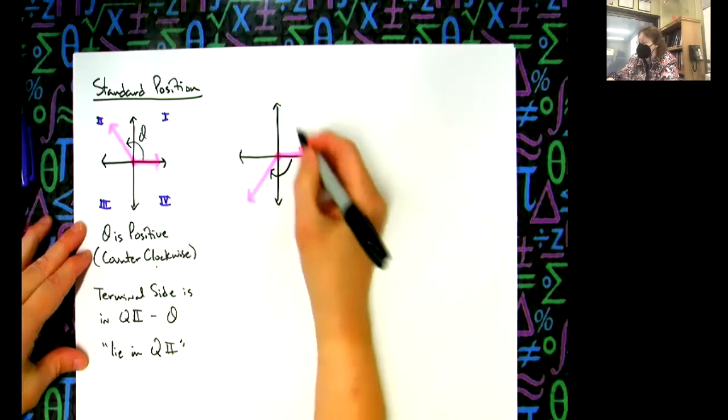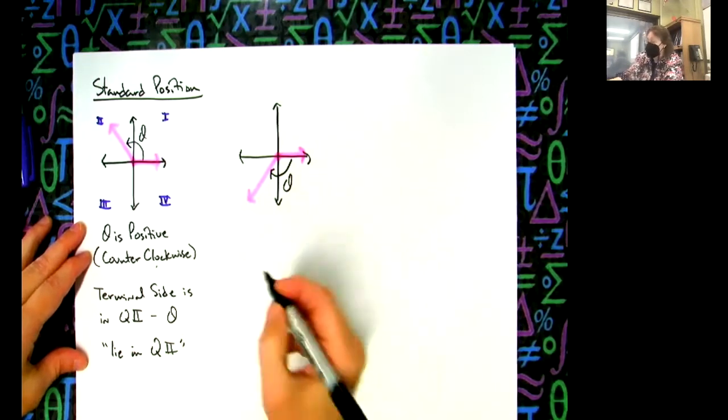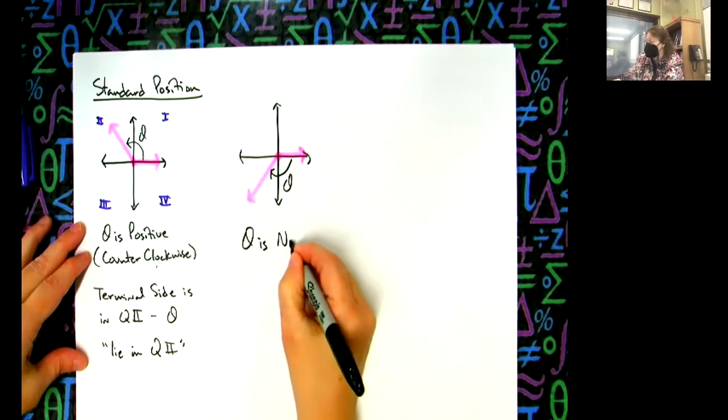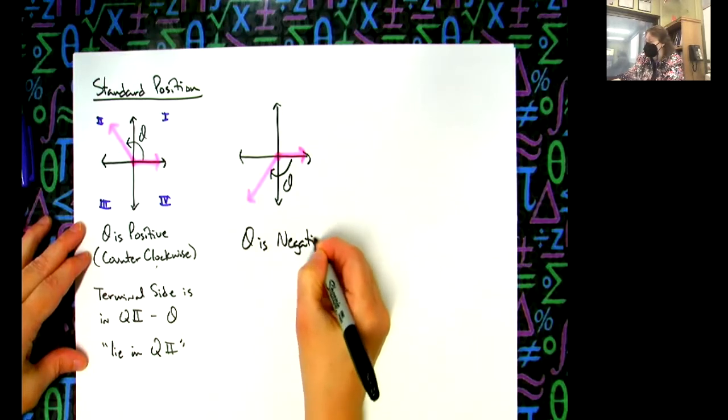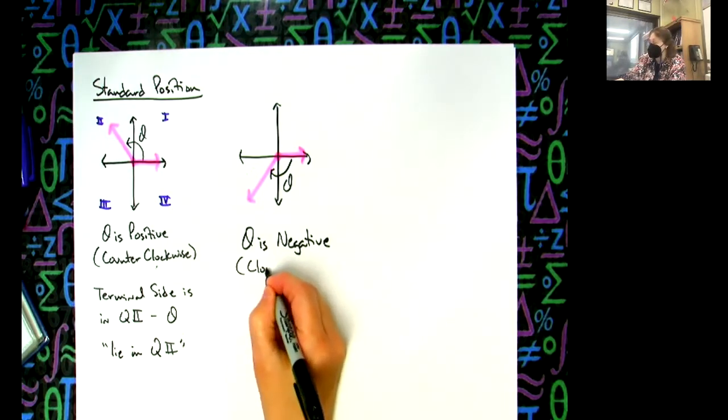If you go clockwise around, as opposed to counterclockwise, then that means our theta is negative. So the orientation of how we go around the coordinate plane is going to indicate whether we have a positive angle or a negative angle. Let's put 'clockwise' underneath.